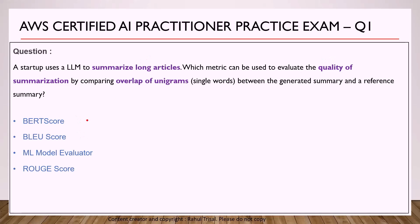What you should also know about ROUGE score is that you calculate precision, recall, and F1 score during evaluation. From the exam perspective, you should know the difference between these three metrics: BERT, BLEU, and ROUGE score.